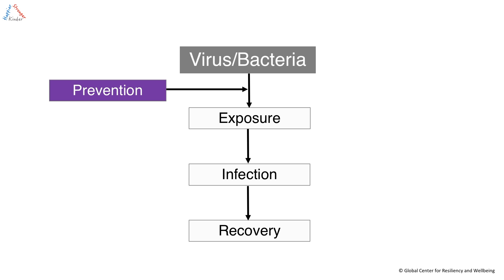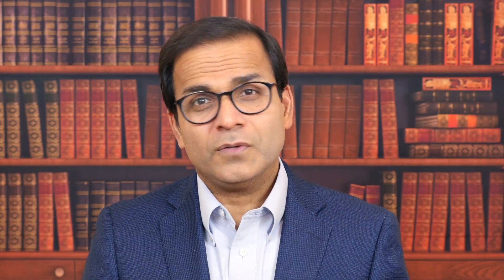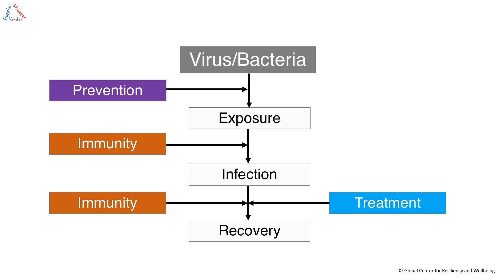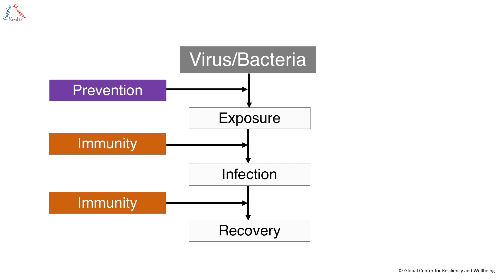Once the exposure happens, it's your immune system that fights the virus or the bacteria — let's call them together pathogens. You've got billions of healthy immune cells that fight and ward them off in most situations. But once the infection has happened, it's the combination of immune system and antivirals or antibiotics. And in many instances we have a vaccine to prevent that from happening, though in the current threat we do not yet have vaccines or antivirals.